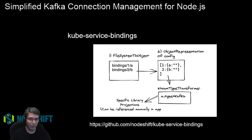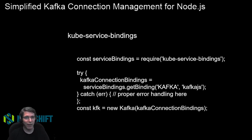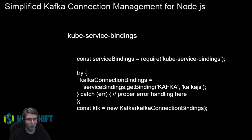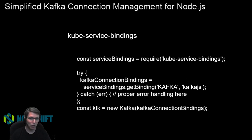That makes it a lot easier to use service bindings. You end up with code that looks something like this: you require the module and call get bindings. I'm asking for the service bindings for the Kafka client, and I'm telling it my client is Kafka.js. It gives me back an object I can use directly with the Kafka.js APIs to create instances and pass the credentials.